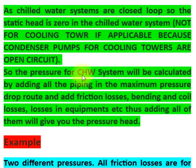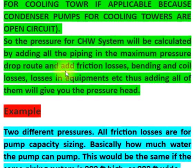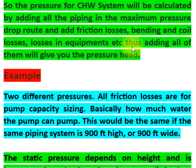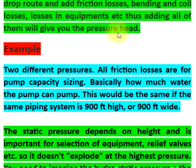The pressure for a CHW system is calculated by adding all the piping losses along the maximum pressure drop route, including friction losses, bending losses, coil losses, and losses in equipment. Adding all of them gives you the total pressure head.